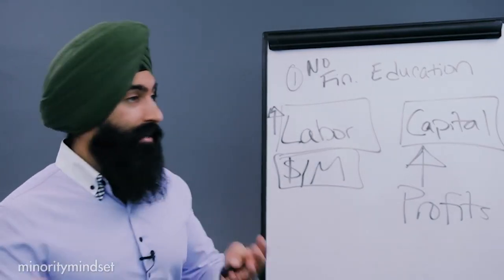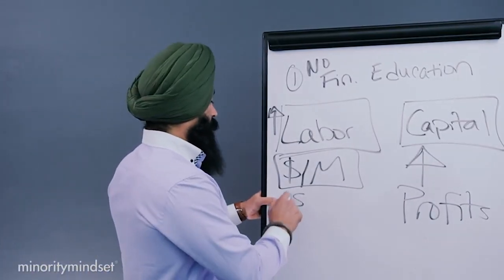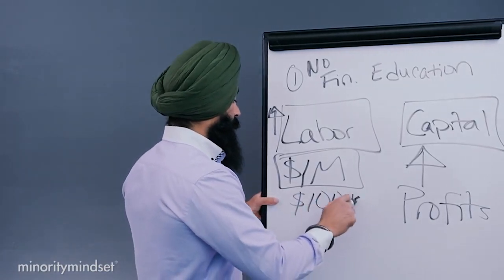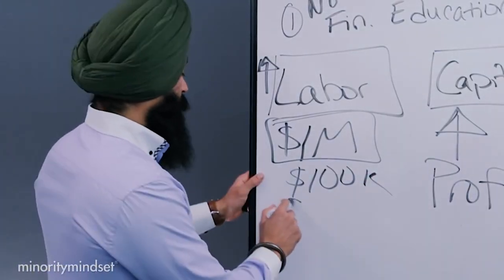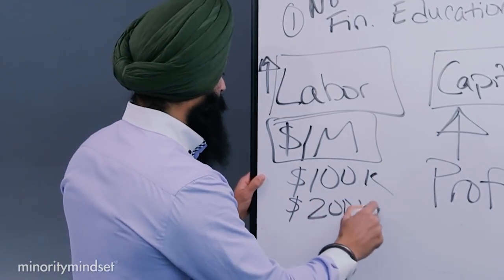I have expenses to pay. Maybe I have $100,000 in avocado costs. I have $200,000 in employee costs.